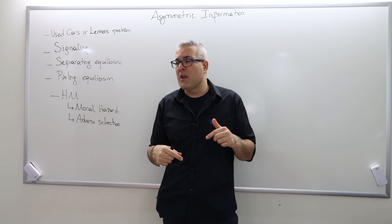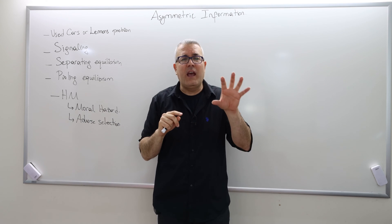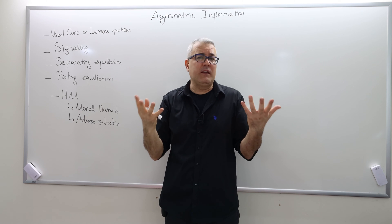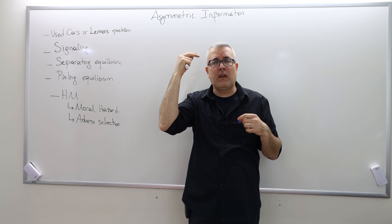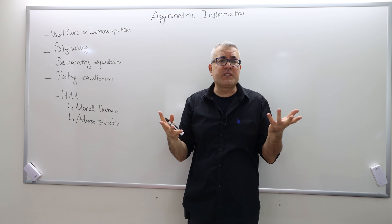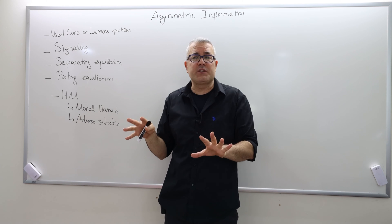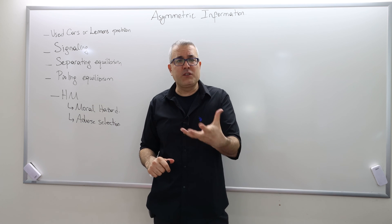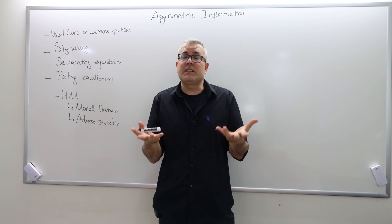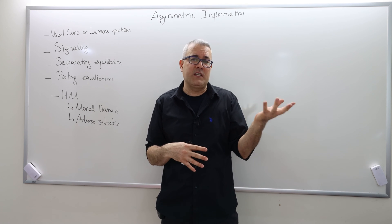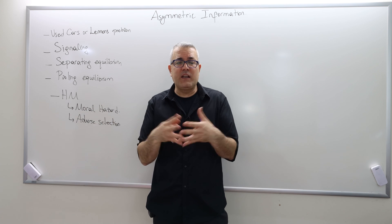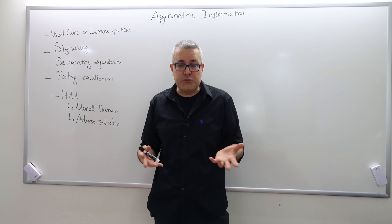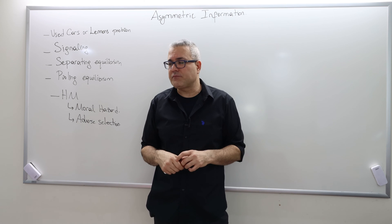The problem — the asymmetric information — is that as a driver you know your type, but the insurance company doesn't know and cannot distinguish. It's not written on your forehead whether you're a good or bad driver. Suppose there's no history between you and the insurance company, so you're a new customer. When they determine the premium, they make a guess — say 50% of the population is careful, 50% careless — and they set the insurance premium at, say, $1,000 per year.